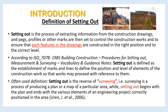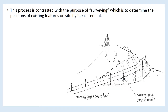Another often-used definition, according to RAN 2006, is that Setting Out is the reverse of surveying. For example, surveying is a process of producing a plan or a map of a particular area, while Setting Out begins with the plan and ends with the various elements of an engineering project correctly positioned in the area. This process contrasts with surveying, which determines the positions of existing features on site by measurement.